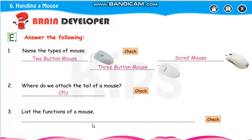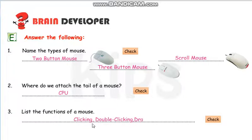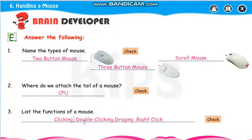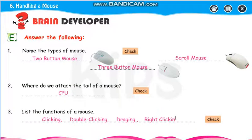List the functions of the mouse. We will write: clicking, double clicking, dragging, and right clicking. So there are four functions — clicking, double clicking, dragging, and right clicking. These are the functions of the mouse.